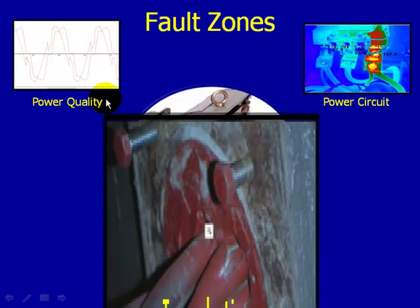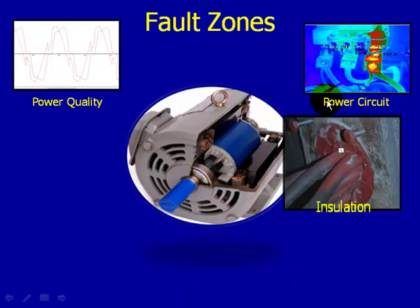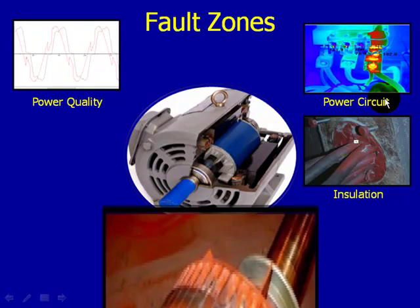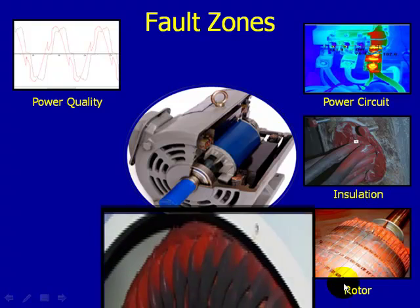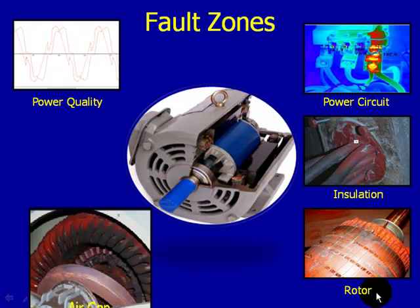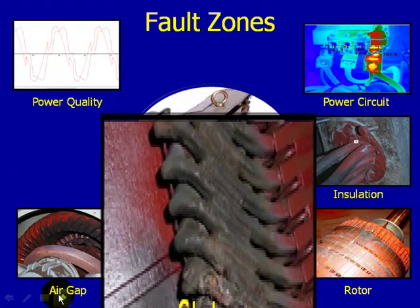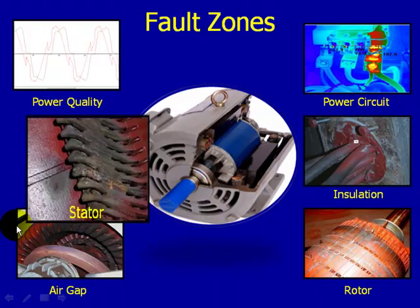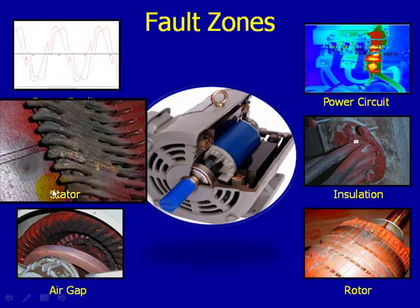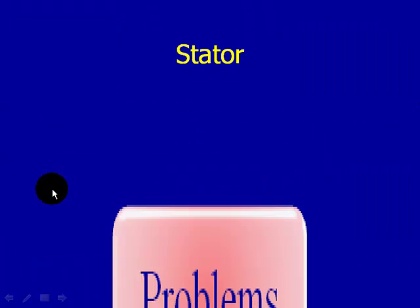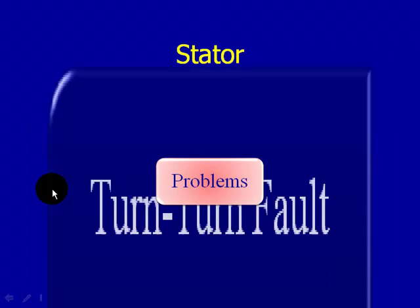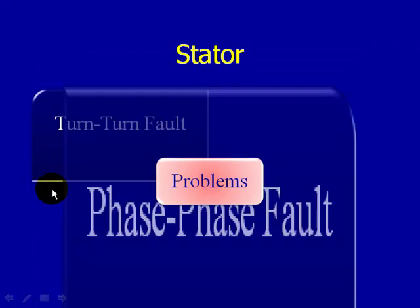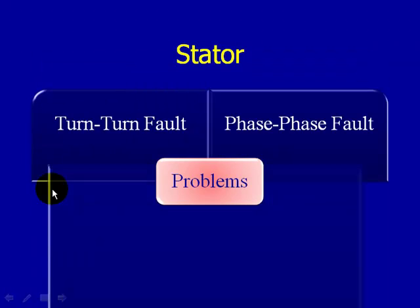PDMA Corporation utilizes a six fault zone approach to analyzing your electric motors. The six zones are: power quality, power circuit, insulation, rotor, air gap, and stator. Today specifically we're going to focus on the stator fault zone.